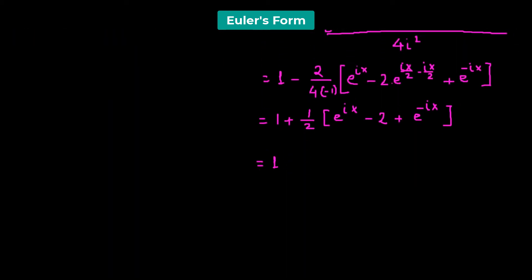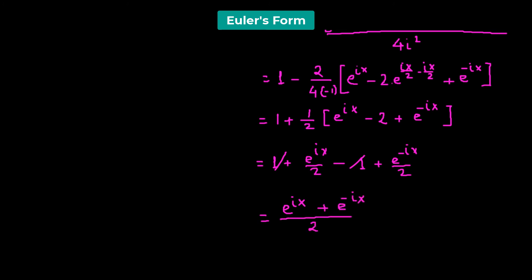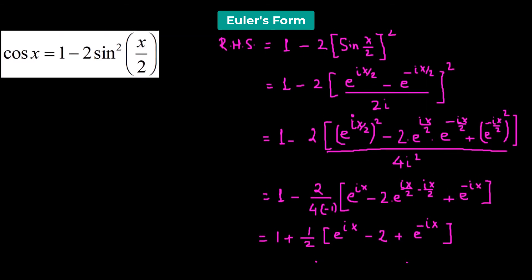Now let's multiply through by one half. We get e^(ix) over 2 minus 2 times one half, which gives negative 1, plus e^(-ix) over 2. The 1 and negative 1 cancel, leaving us with e^(ix) plus e^(-ix) divided by 2. This is the Euler form of the cosine function, which proves the identity that cosine of x equals 1 minus 2 sine squared (x over 2).